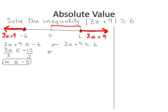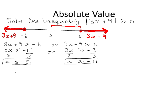Or, solving for x in the second inequality: subtracting 9 from both sides gives us 3x greater than or equal to minus 3, and dividing both sides by 3 gives x greater than or equal to minus 1. So these are our solutions.